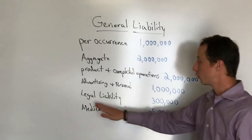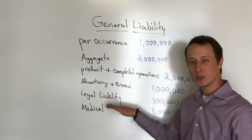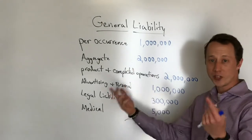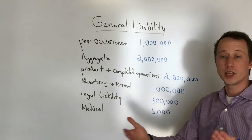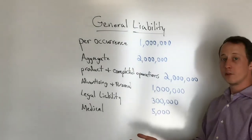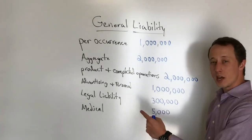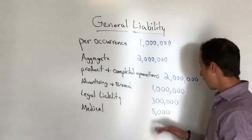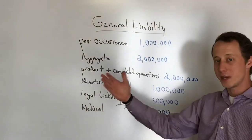Next is what's referred to as legal liability — you may also see it listed on your policy as tenant legal liability. If you rent your space and you cause damage, you're deemed negligent — say for a fire in your location — you are going to be responsible back to your landlord. Normally you'll see those at a hundred thousand; most policies offer three hundred thousand, and I recommend three hundred thousand, but just make sure it's enough to cover your leased space.